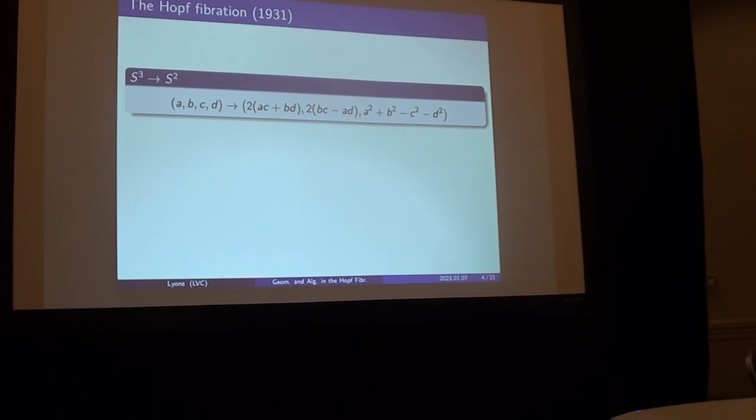The three sphere is slightly more abstract. We can't picture these four dimensions in our head. Some of you maybe can, but I can't. But it's the same idea. The four tuple of real numbers, the squares add up to one. These are the vectors in R4 that are one unit length from the origin. That's the three sphere.